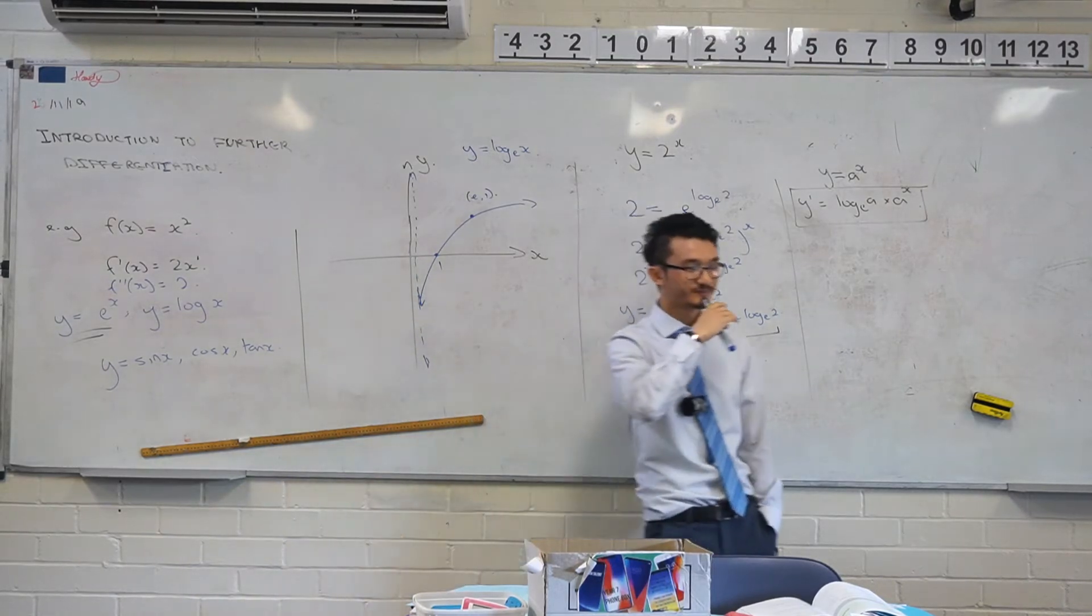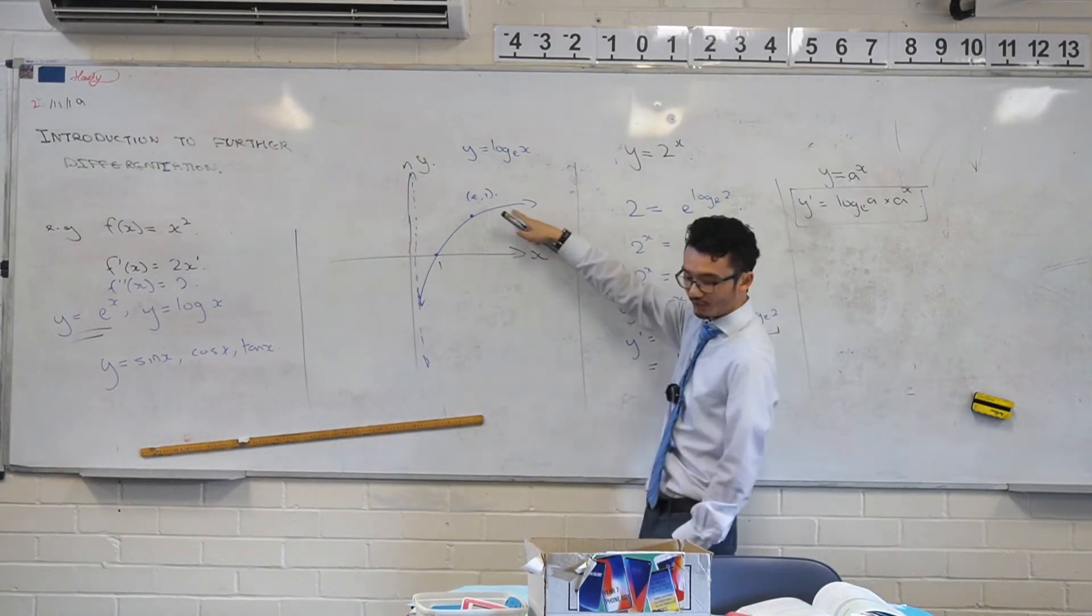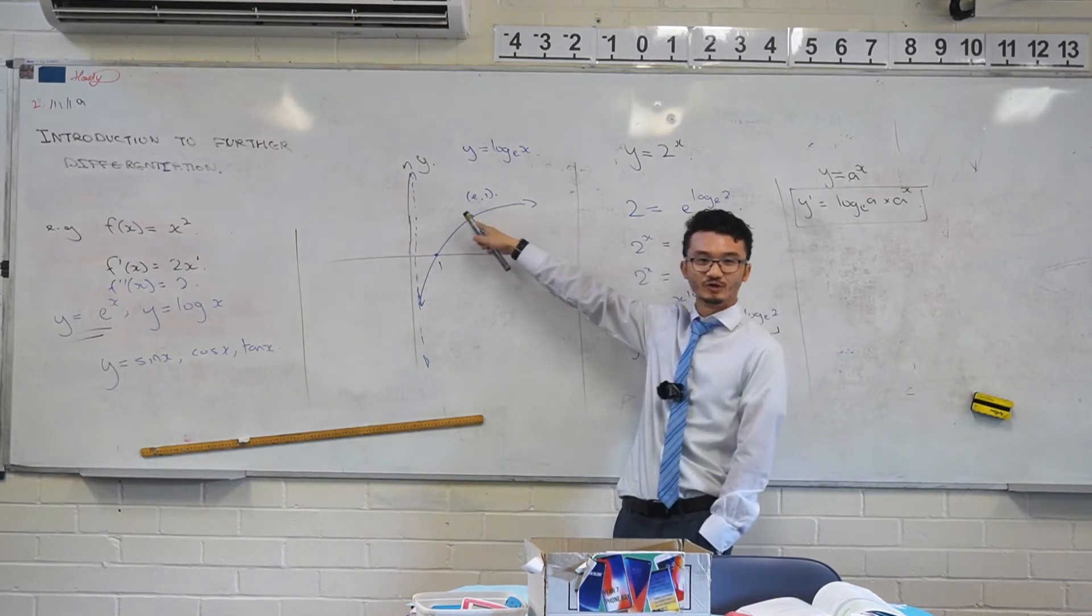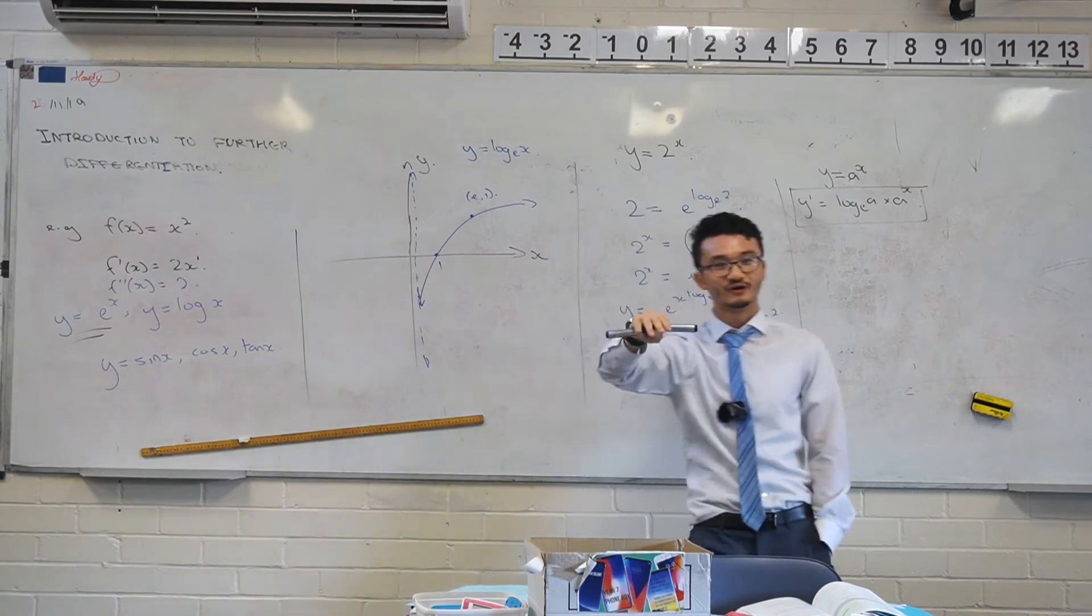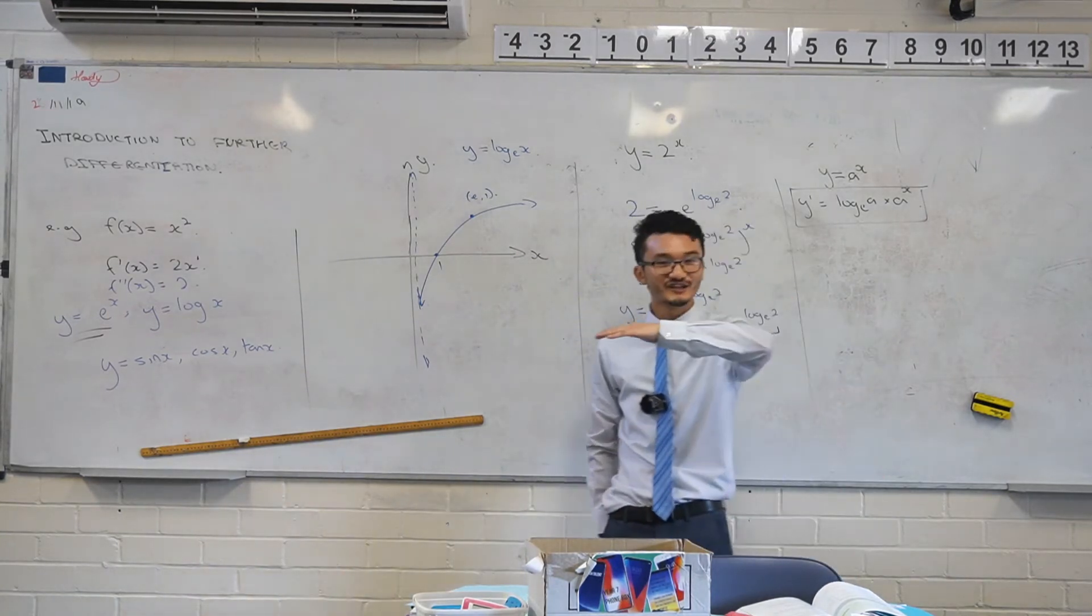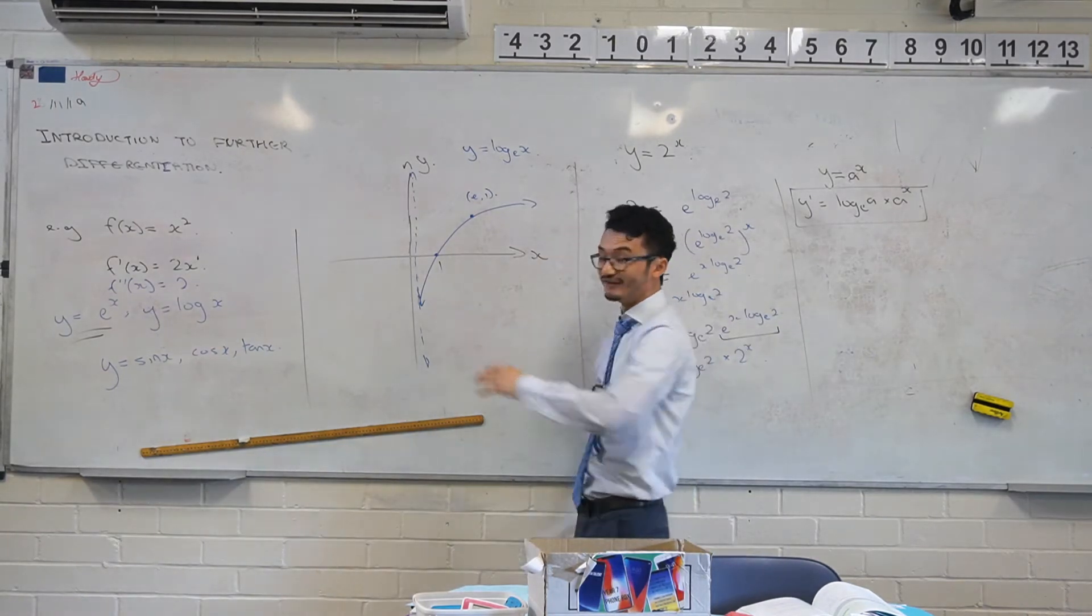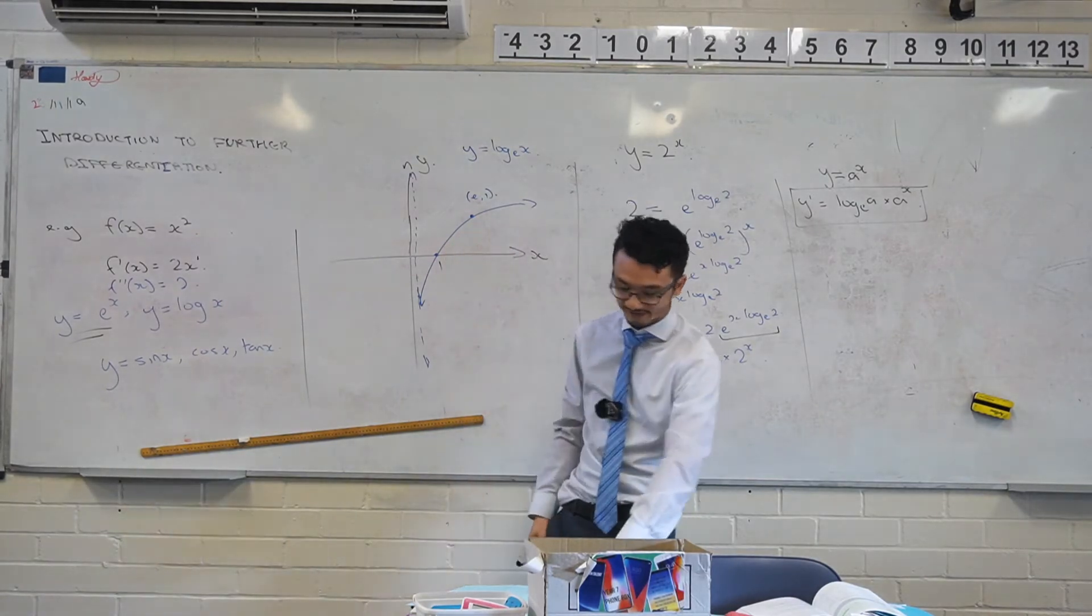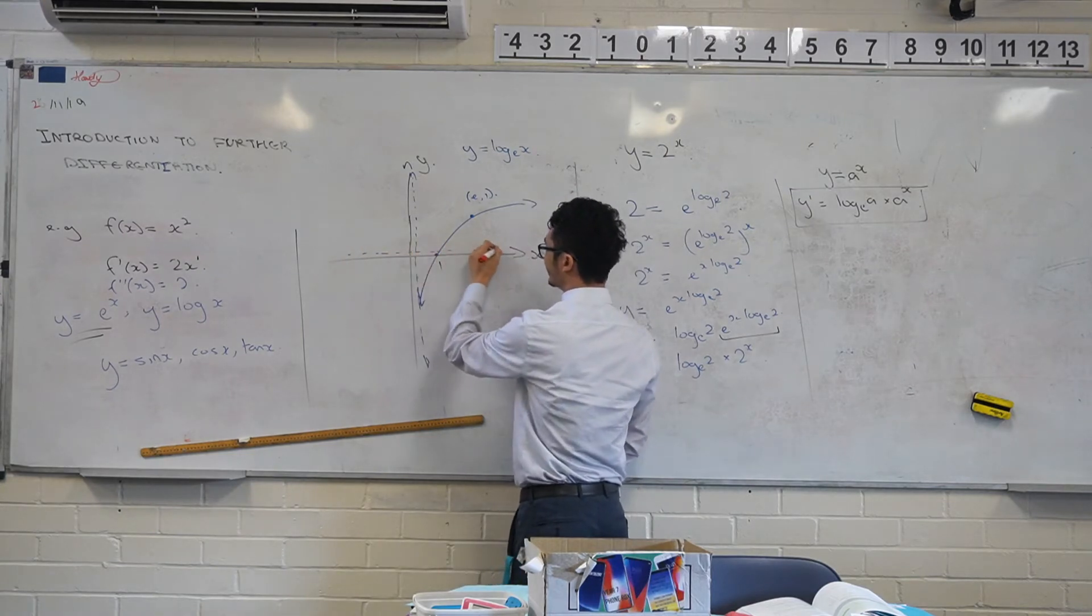Does it ever go negative? Not really, right? Because at this point, it seems to flatten out. And if you use a graphing software, you'll see it more clearly that it very closely approaches a horizontal line. Now, if a line's horizontal, what kind of gradient is that? Zero. So we can kind of make an observation that seems like this gradient function will approach zero, but never quite reach.